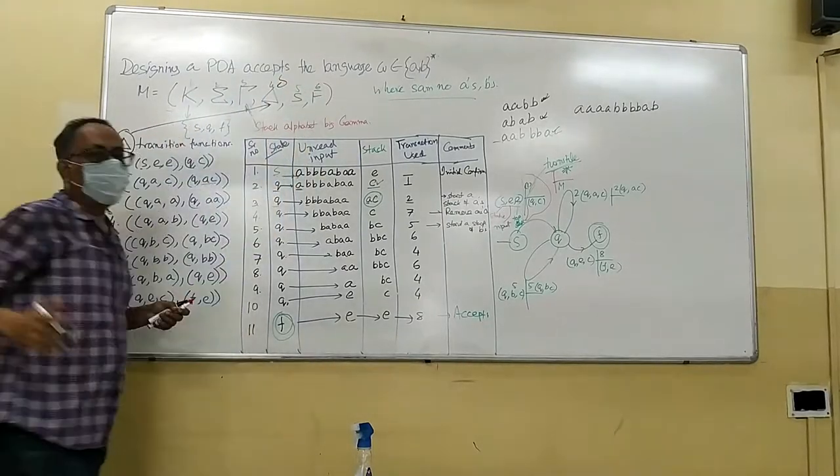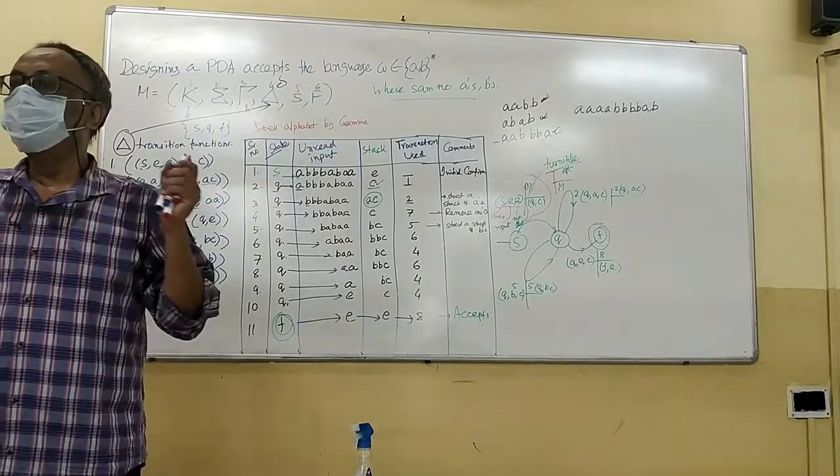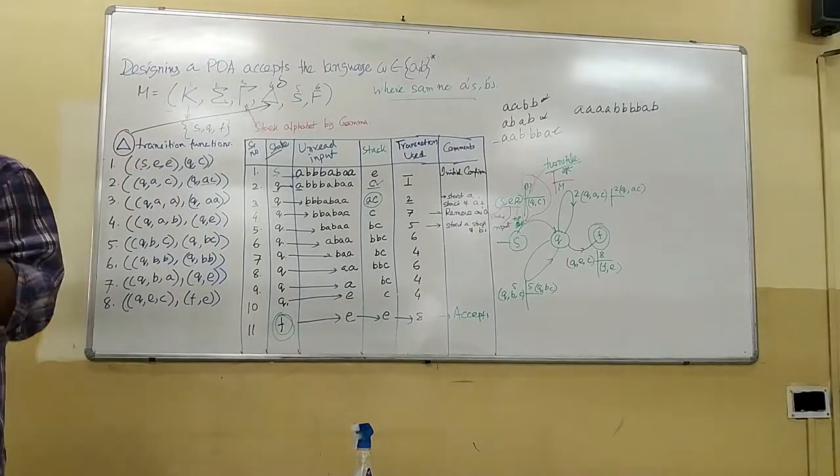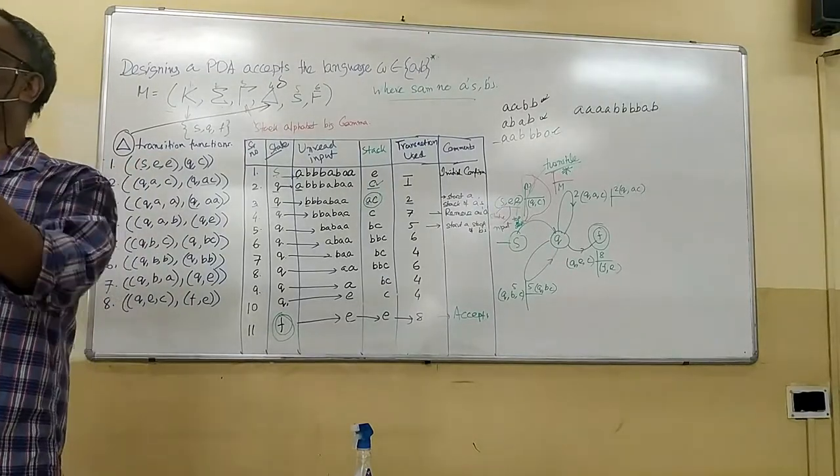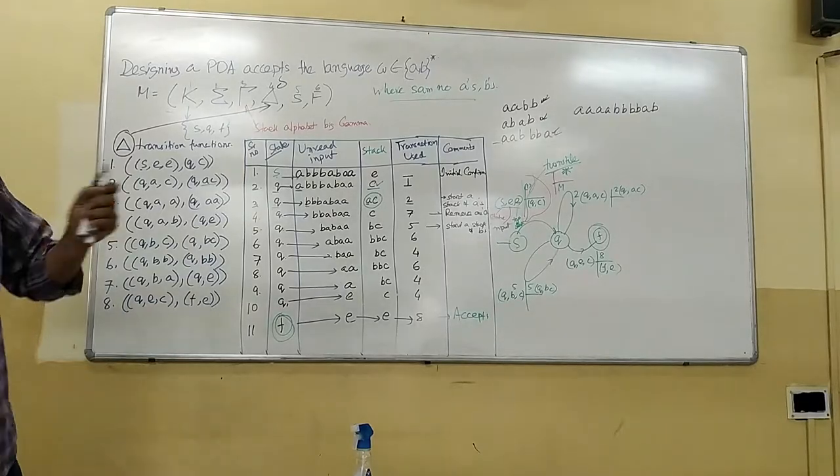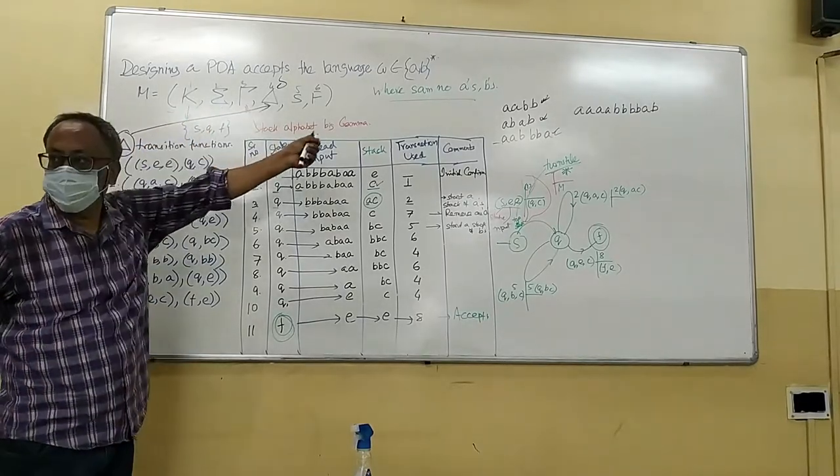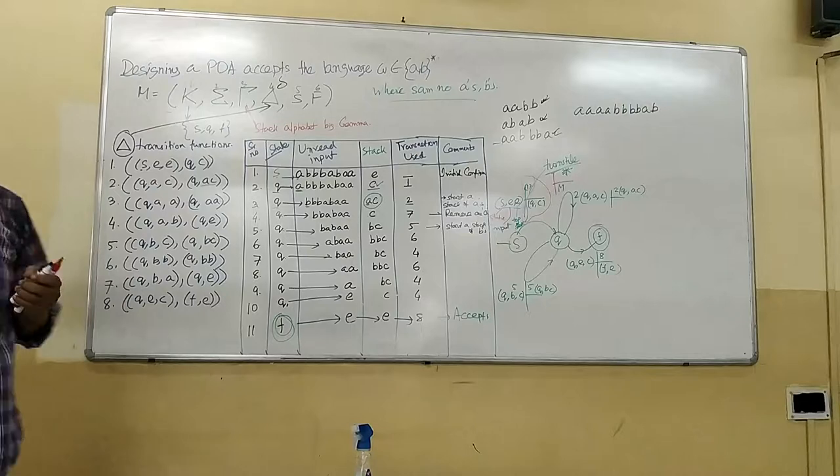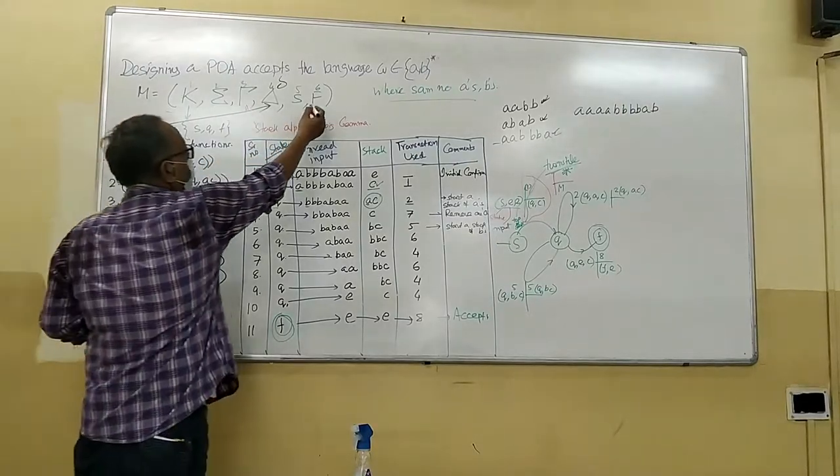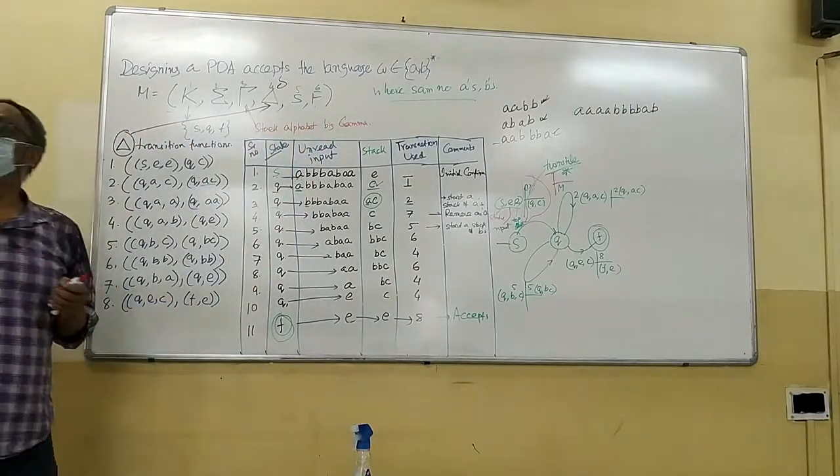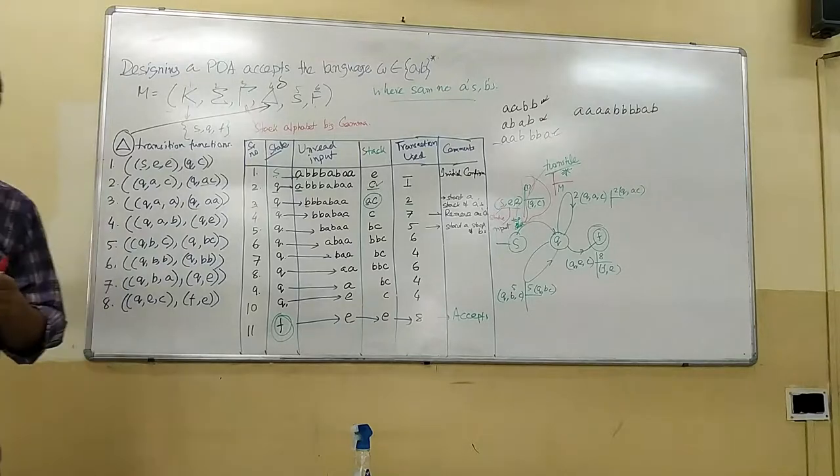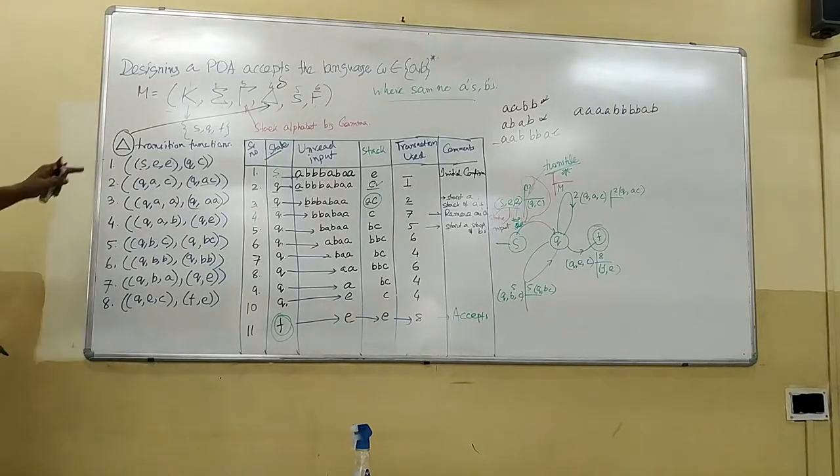Whenever you see in the finite state machine, we have 5-tuples. Whenever in the Mealy machine or the Moore machine, we have an extra output, 6-tuples. In PDA, we have 6-tuples. In Turing machine, you can have F is accepting states, another is rejecting states. In Turing machine, there are 7-tuples. You can know this number.